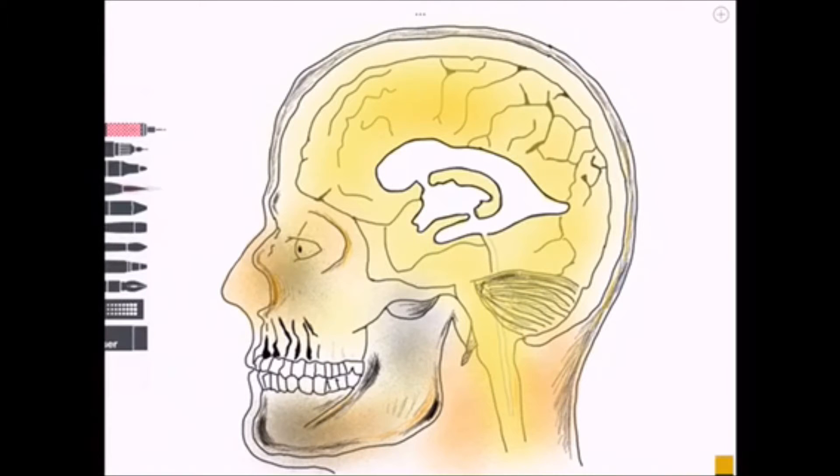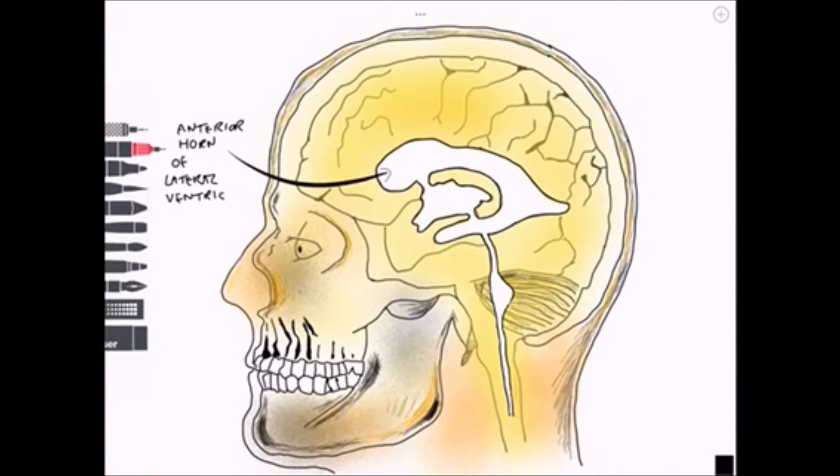The largest of these spaces is known as the lateral ventricles and there's one of those in each hemisphere. At the front we have a projection known as the anterior horn that projects into the frontal lobe.